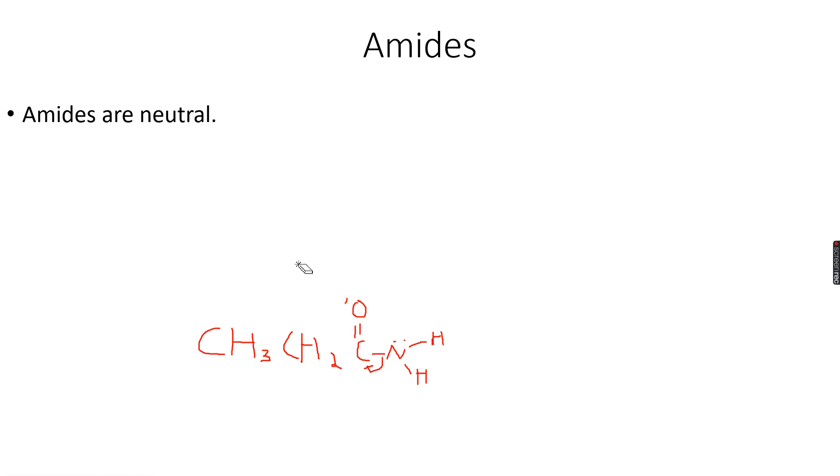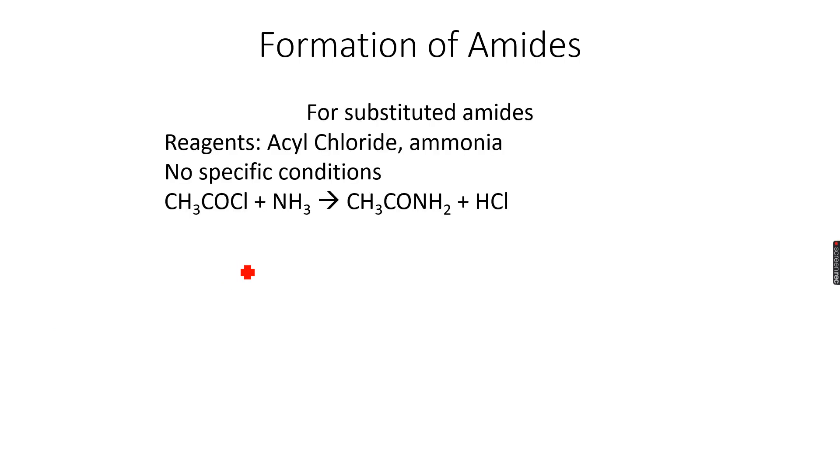Now we can move forward to formation of amides. There are certain ways in which amides can be formed. For substituted amides, which are monosubstituted amides like propanamide, we react acyl chlorides with ammonia. For example, if I have to form a substituted amide with two carbon atoms, I will take the two carbon atom derivative of an acyl chloride.